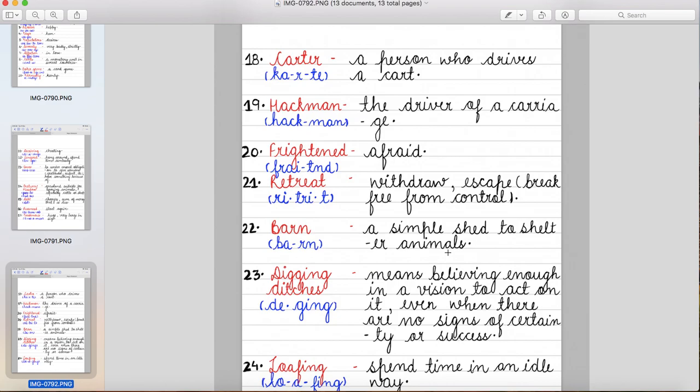Twenty-third digging ditches. That means believing enough in a vision to act on it even when there are no signs of certainty or success. Aise vision pe believe karna jiski certainty na ho ki wo chalega ya nahi chalega, wo successful hoga ya nahi hoga.